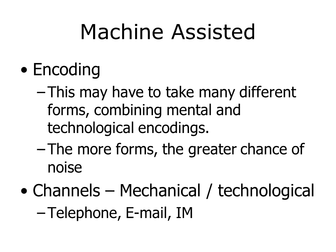The more times a message is encoded, the greater the chance of noise or error. The channels in machine assisted communication are mechanical or technological. Examples would be a telephone, email, instant messaging, and text messaging.